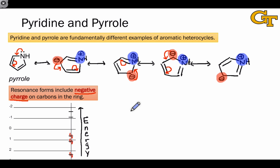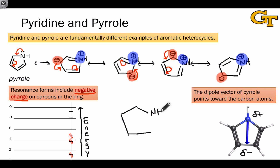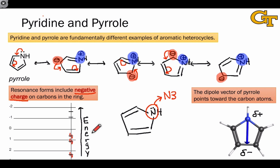An important consequence of this donation is that the dipole moment of pyrrole points in the opposite direction — from the nitrogen atom toward the carbon atoms. Put another way, there's partial positive charge in the vicinity of the nitrogen atom and partial negative charge in the vicinity of the carbons. A key structural difference between pyridine and pyrrole is that the nitrogen atom in pyrrole is not an N2 nitrogen but an N3 nitrogen — a three-connected nitrogen whose lone pair is now part of the pi system. This pair of electrons does contribute to the pi electron count and does appear in the pi molecular orbitals.